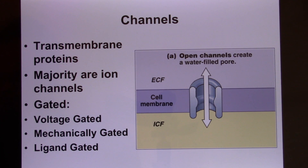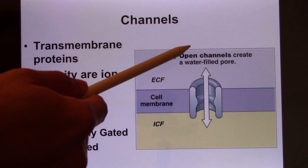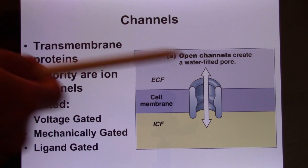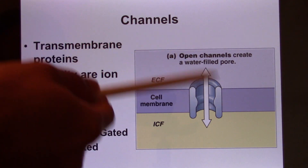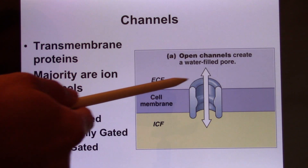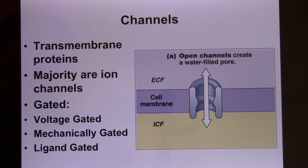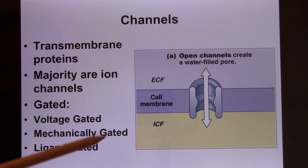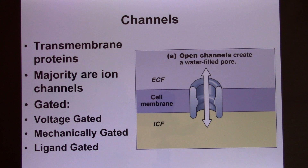Ion channels provide an opening from the extracellular fluid to the intracellular fluid — outside to inside, both are aqueous. These channels, if open for too long, can compromise the cell's internal environment because the ECF and ICF are very different. So most of the time they are closed. To open them you need a specific mechanism, giving us three categories: voltage-gated, mechanically-gated, and ligand-gated ion channels.